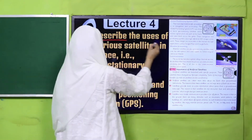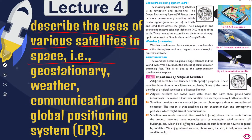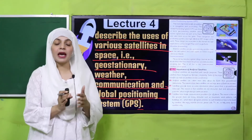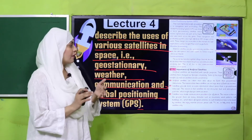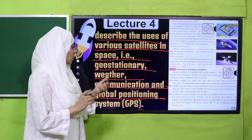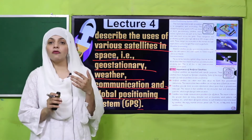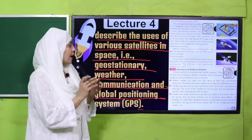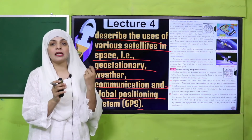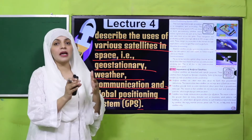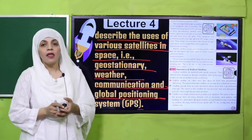Then, the students will be able to describe the uses of various satellites in space — that is, geostationary, weather, communication, and Global Positioning System (GPS). Satellite kitni kisam ki hain, in se koon koon se kaam liye jaate hain — jaise ke weather ko find out kiya jata hai, aur GPS jo Global Positioning System hai, wo inhi satellites ke through connect hota hai. Geostationary process bhi satellites ke through control hoti hai — yeh sab detail mein discuss kiya jaega.